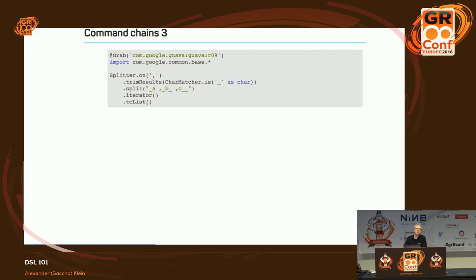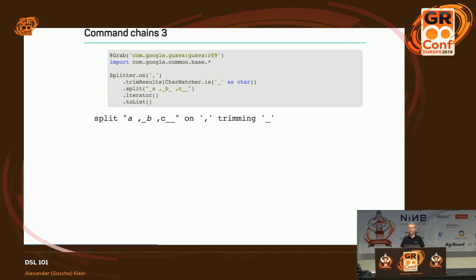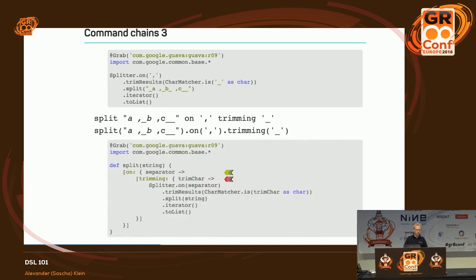Another use case for command chaining is beautifying existing code. For example, Groovy's Splitter class lets you split a string on commas and trim by underscores, giving back a list. It would be nicer to say: split myString on comma, trim underscore. The implementation is the same pattern — split returns something with an 'on' method, that returns something with a 'trimming' method. This is exactly the same code as the verbose version.